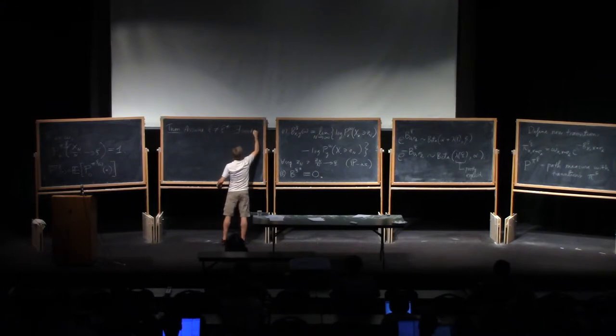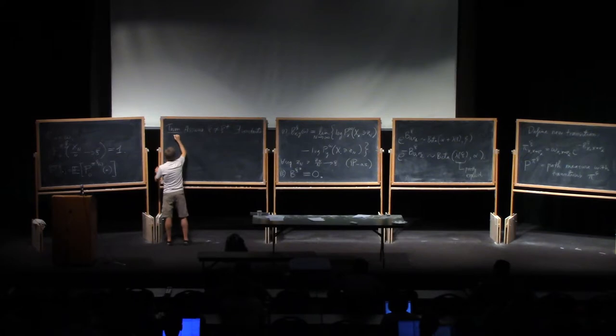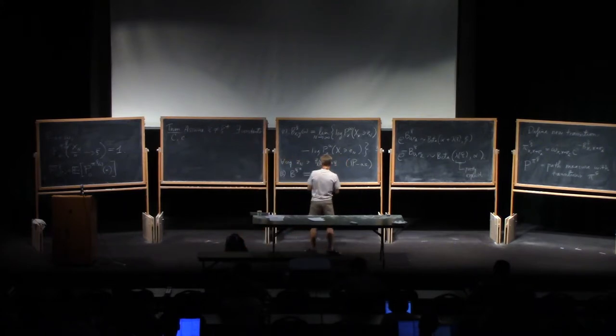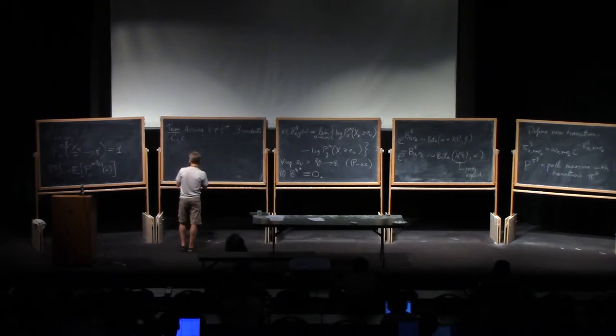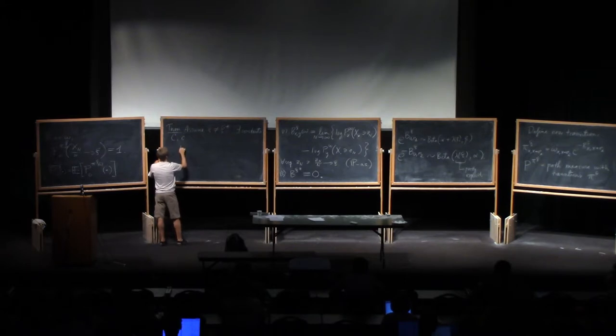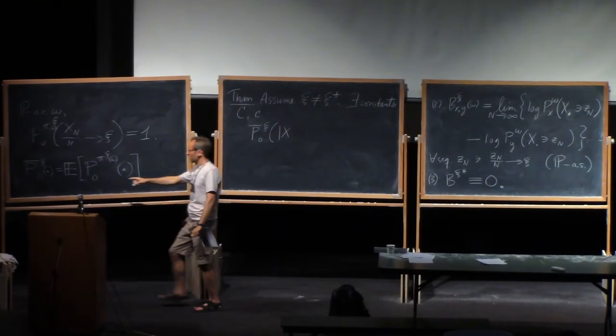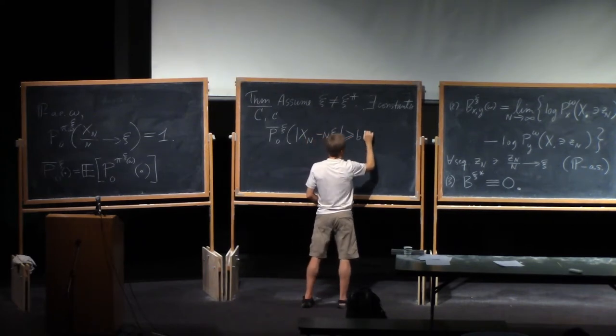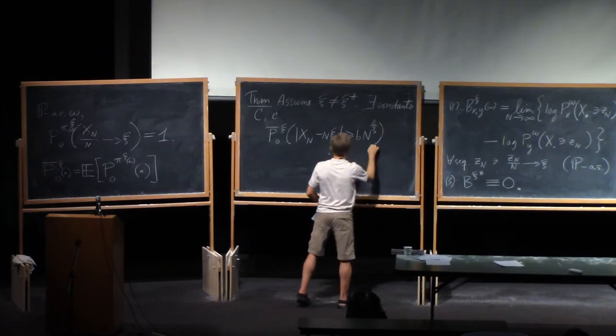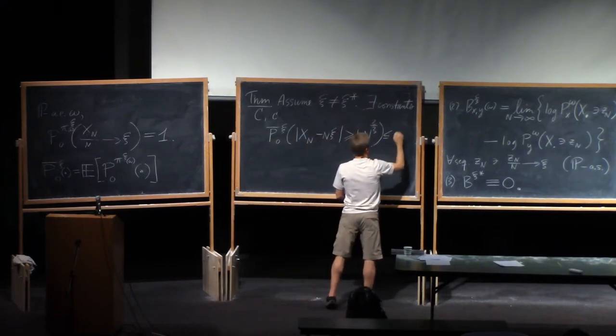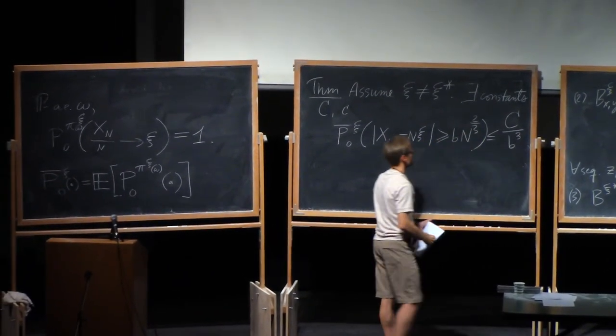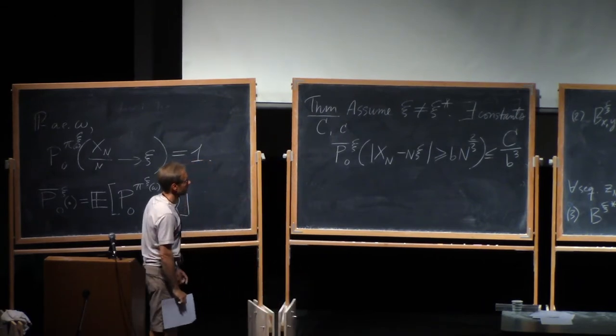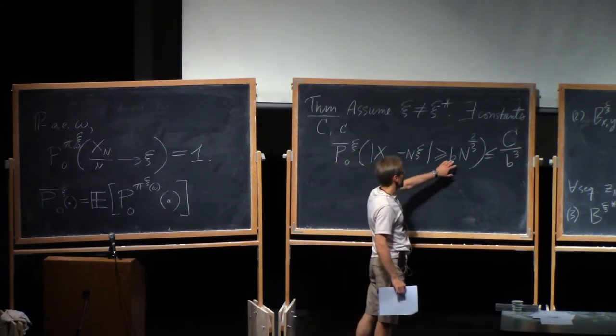Let me just look here again. So there's an upper bound and a lower bound. So for the upper bound, we have the following. So I take this averaged measure here. And I ask that the walk deviate from n xi by an amount b times n to the 2 thirds. And that's going to be bounded above by capital C over b cubed. So let's parse that for a few seconds. What is it saying? It's saying that if you ask to deviate by some large number b...